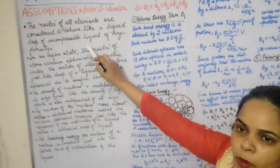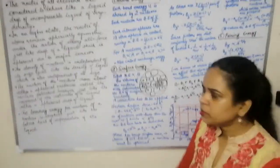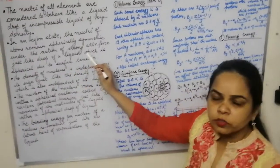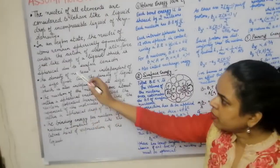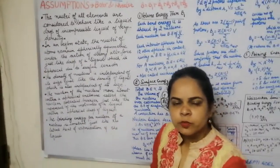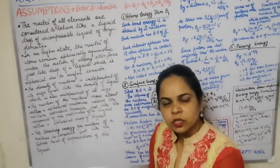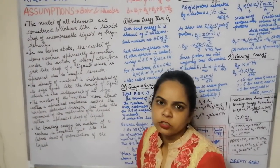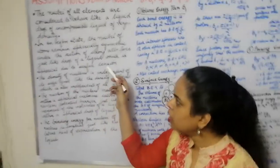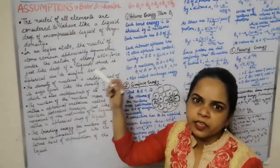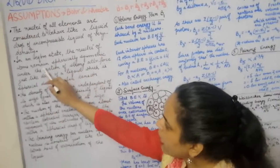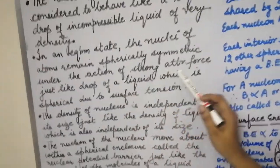The second assumption was that in the equilibrium state the nucleus remains spherically symmetric under the action of strong attractive nuclear forces — similar to a drop of liquid which is also spherical due to surface tension. The surface molecules are always under an attractive force from the inner molecules, making the liquid envelope spherical. Similarly, the surface of the nucleus is always under tension due to inner nucleons, giving it a spherical shape.